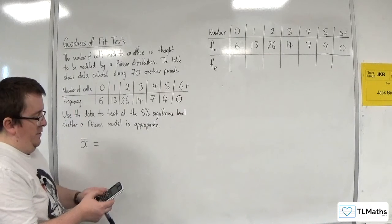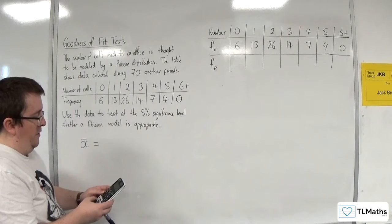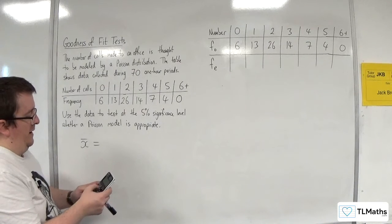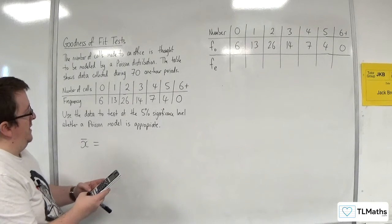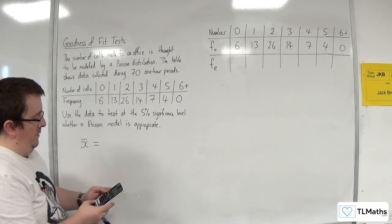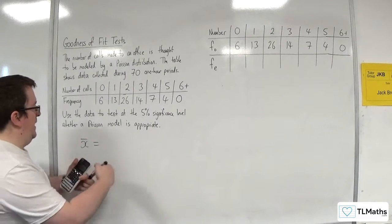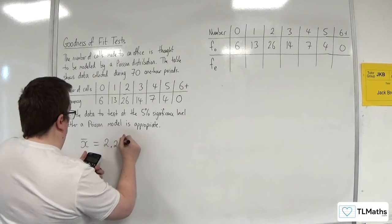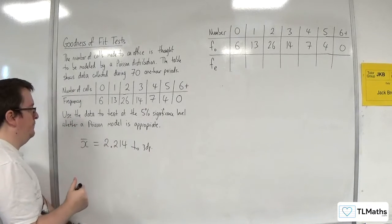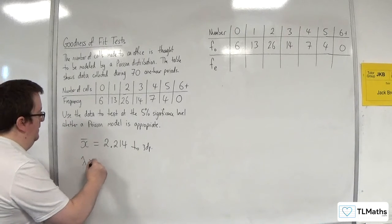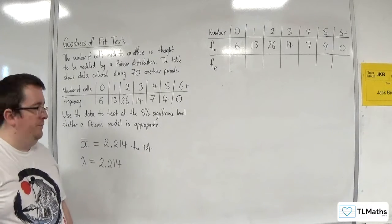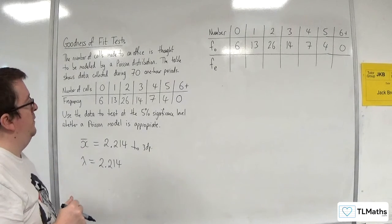I'm going to go to menu, number 6, one variable. Enter 0, 1, 2, 3, 4, 5, 6 in my X column and in my frequency column: 6, 13, 26, 14, 7, 4, 0. Option number 3, and I'm getting a mean of 2.214 to 3 decimal places. So that is what I'm going to use as my lambda, 2.214.